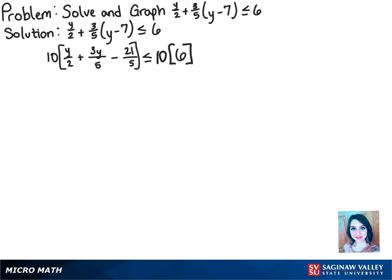When multiplying this, we can cross-cancel as we go along. The denominator 2 will go into 10 five times, so we really have 5 times y. We'll have 5y plus...